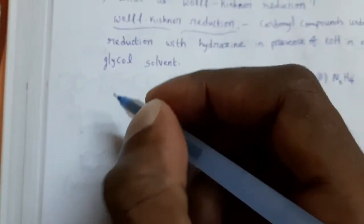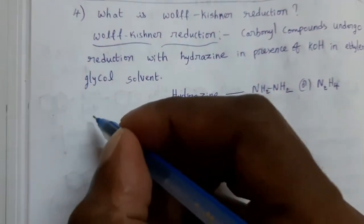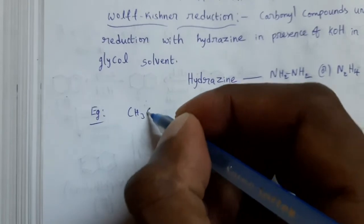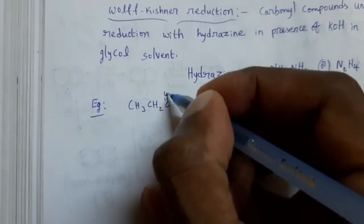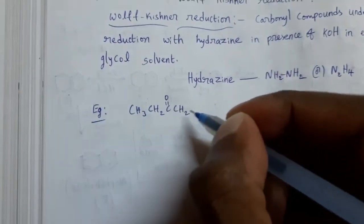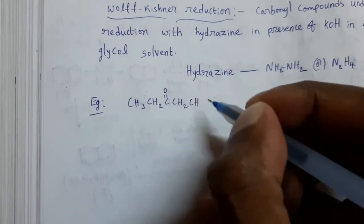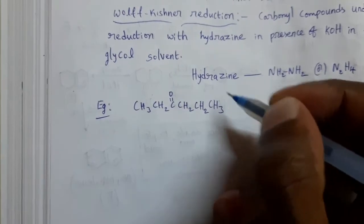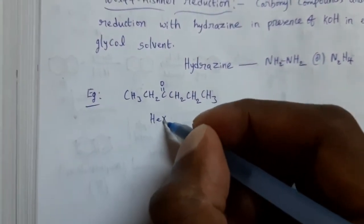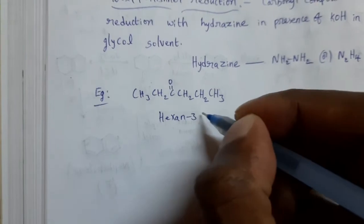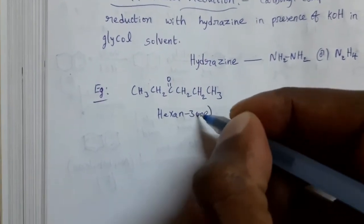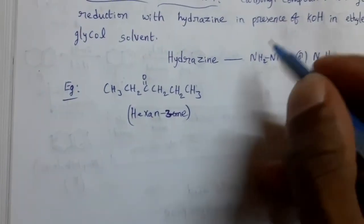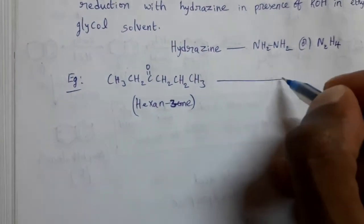Take an example so you can understand clearly. The example is CH3CH2CH2-C(=O)-CH2, which is hexan-3-one.